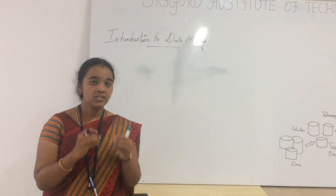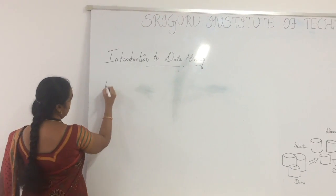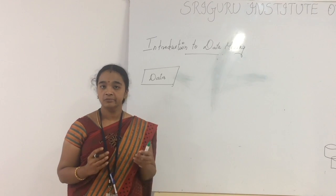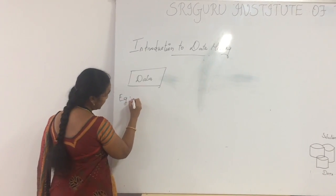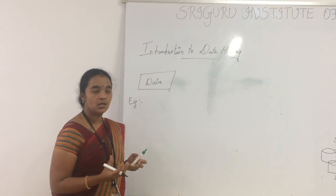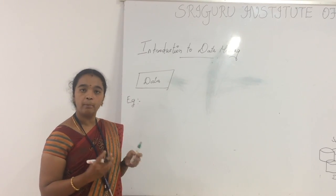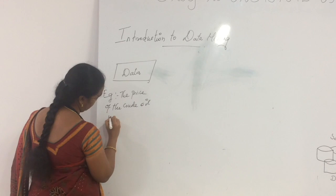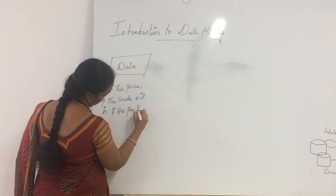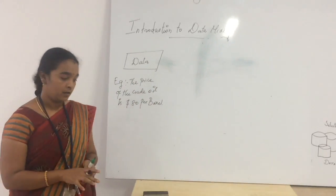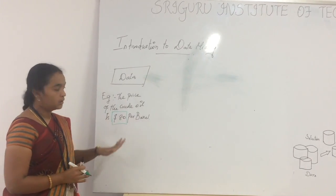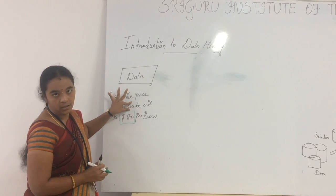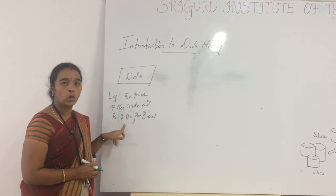Before entering into this topic, we need to know what is data. Data is nothing but a raw fact of the world. For example, if you are taking the crude oil, the price of the crude oil is $80 per barrel. This is considered to be data. From this, we do not know anything about this crude oil, but we can only know that the price of the crude oil is $80 per barrel.